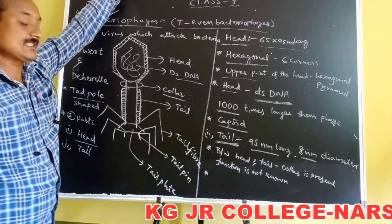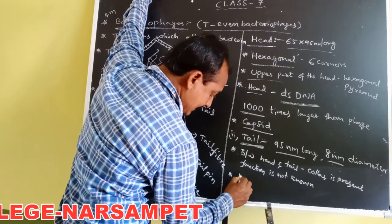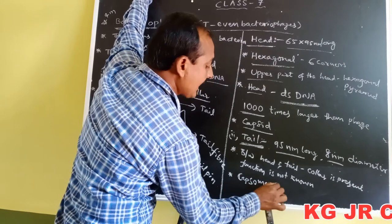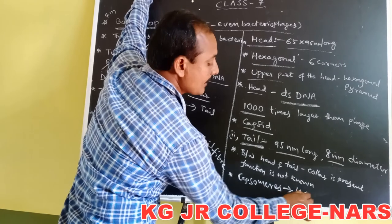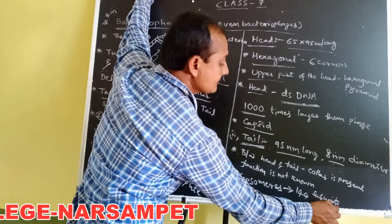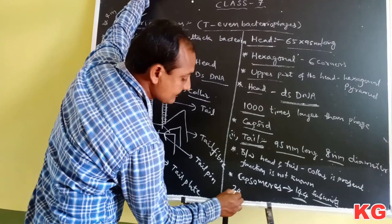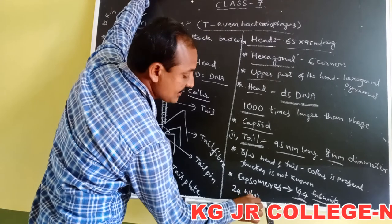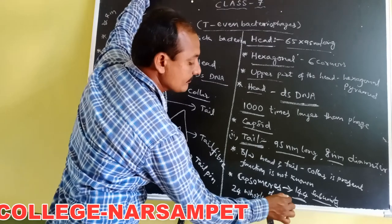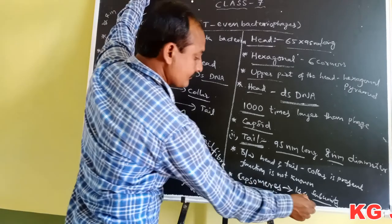The tail is surrounded by a capsid. The capsid consists of 144 sub-units called capsomeres. These 144 sub-units are arranged in 24 annular rings of 6 each.